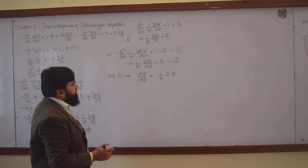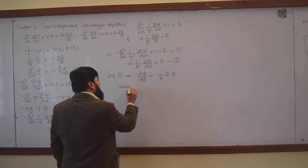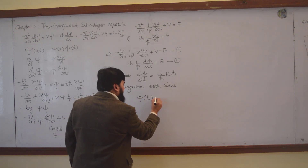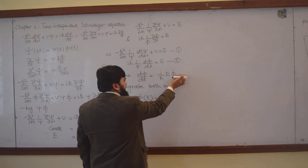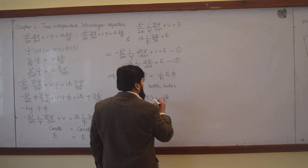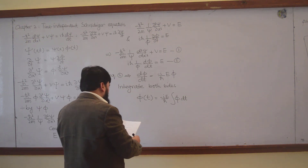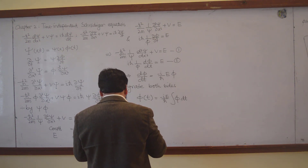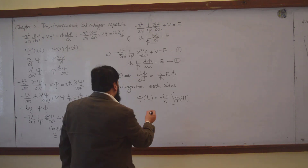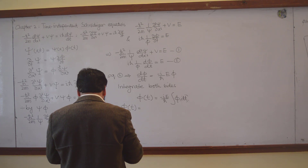To solve for phi, rewrite Equation 2 as: 1 over phi times d phi equals minus i E over h-bar times dt. Integrating both sides gives log phi equals minus i E t over h-bar. Taking the exponential of both sides then yields phi(t) equals e to the power minus i E t over h-bar.